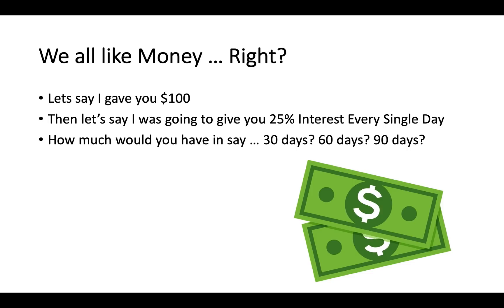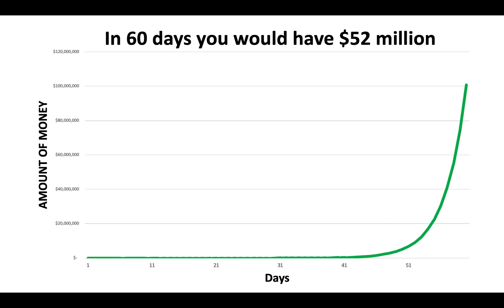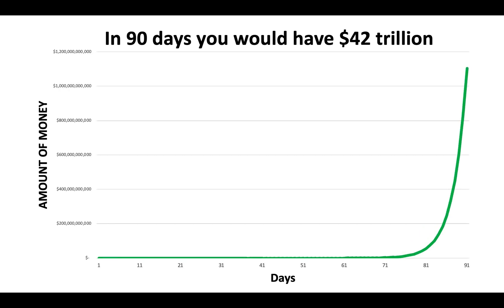We all like money, right? So let's say I gave you $100, and I was going to give you 25% interest every single day. How much money would you have in 30 days, 60 days, 90 days? Well, in 30 days you'd have $64,000 — a pretty good investment. In 60 days, you'd have $52 million. And in 90 days, you'd have $42 trillion.